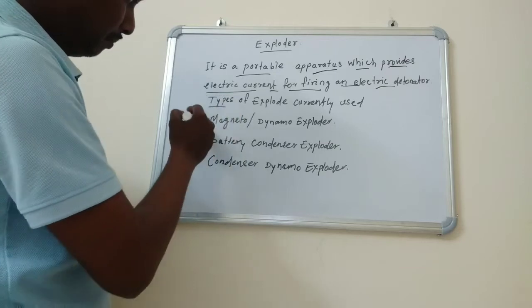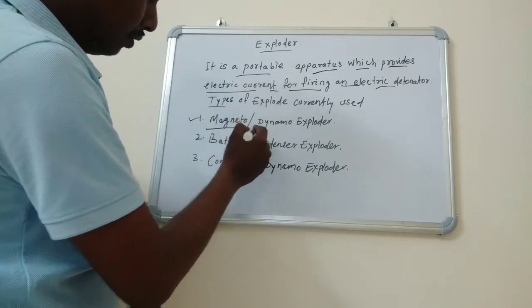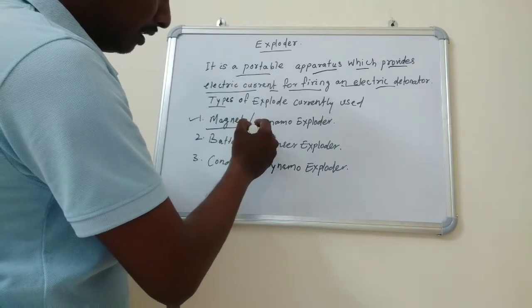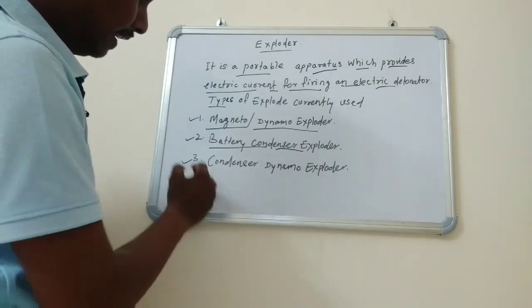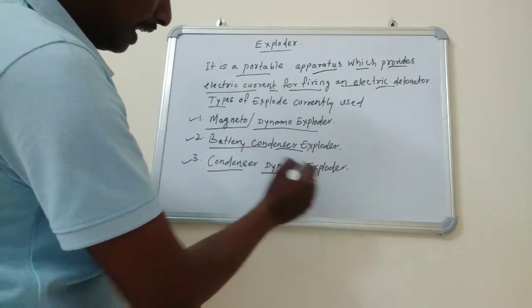First is magneto or dynamo exploders, second is battery condenser exploders, and third is condenser dynamo exploders.